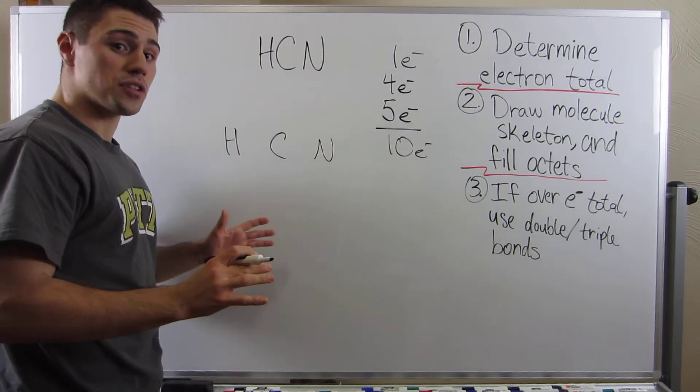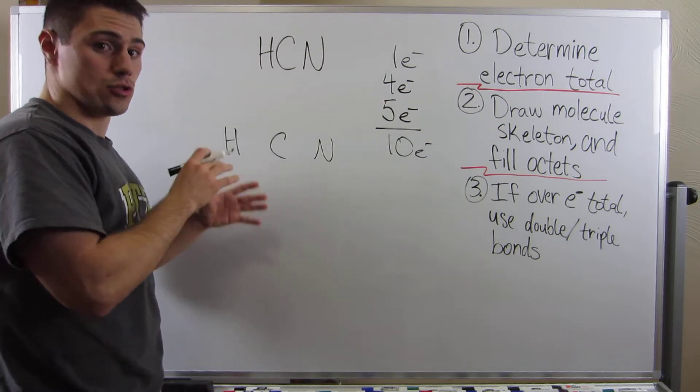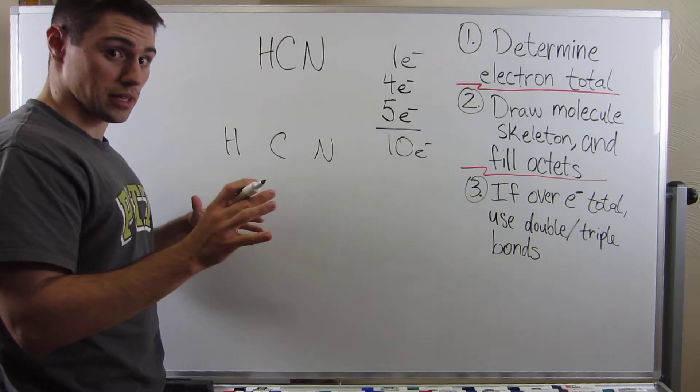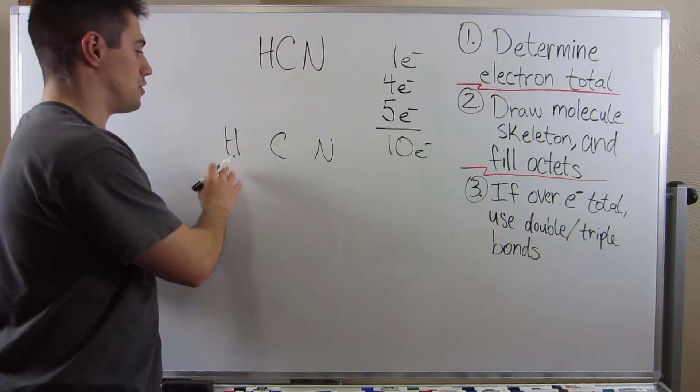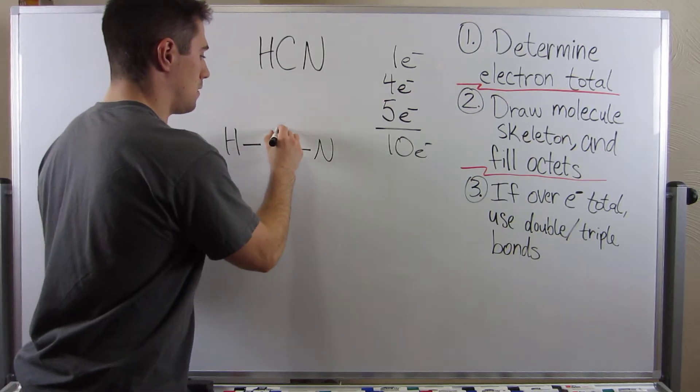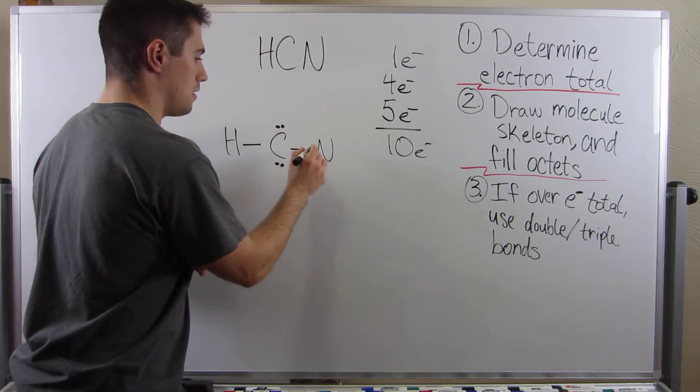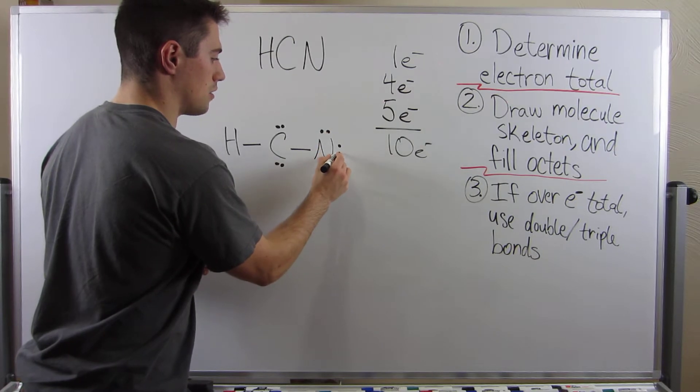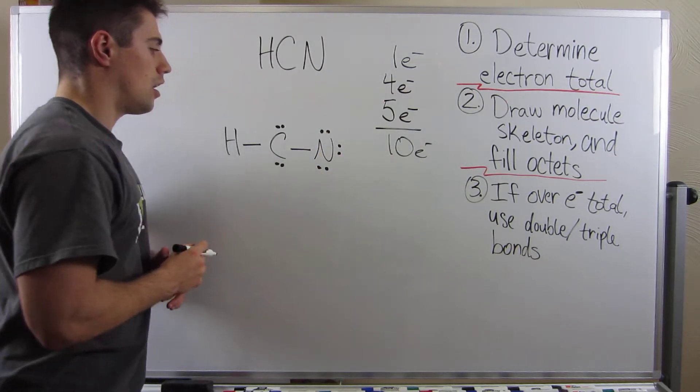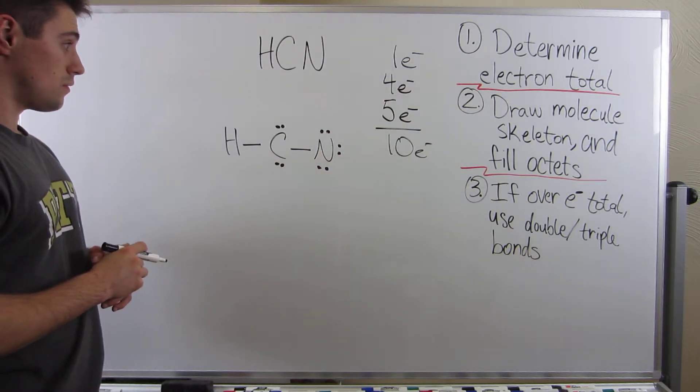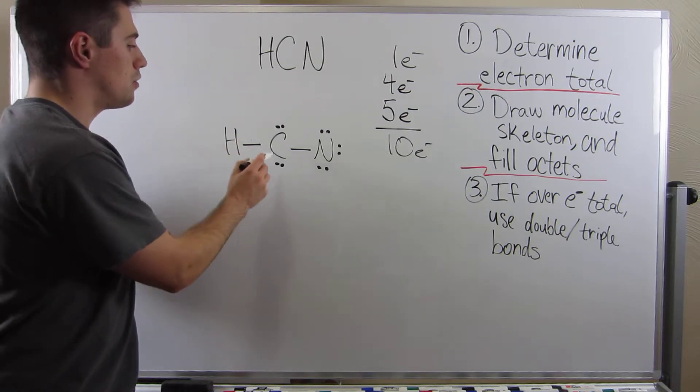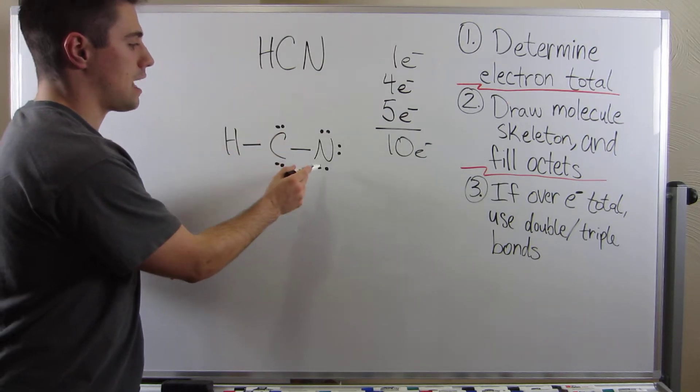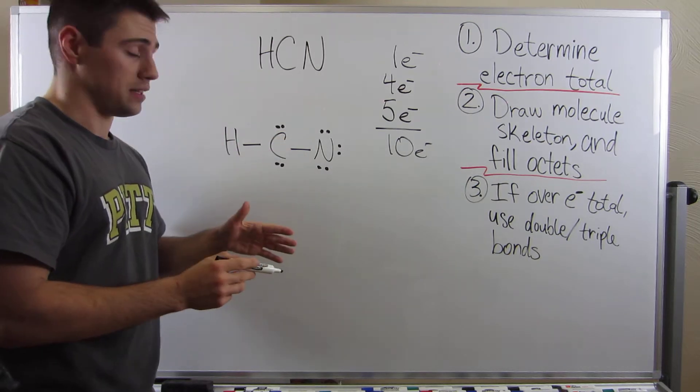It turns out the skeletal structure is laid out exactly how this is written. So I'll write H, C, N. Alright, fill everyone's octet. Four to everybody, eight to everybody—excuse me, two to hydrogen. Okay, there we go. Now let's count. Two, four, six, eight, ten, twelve, fourteen. Four too many. So let's make a double bond.